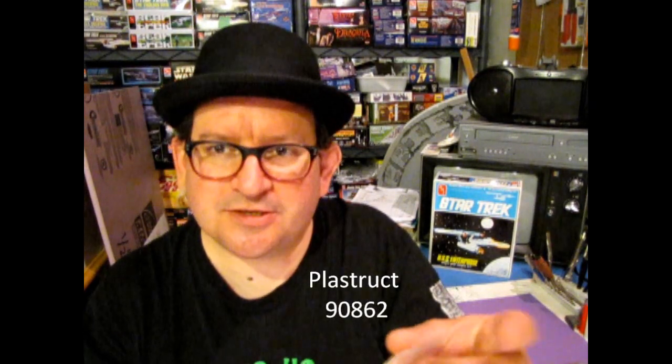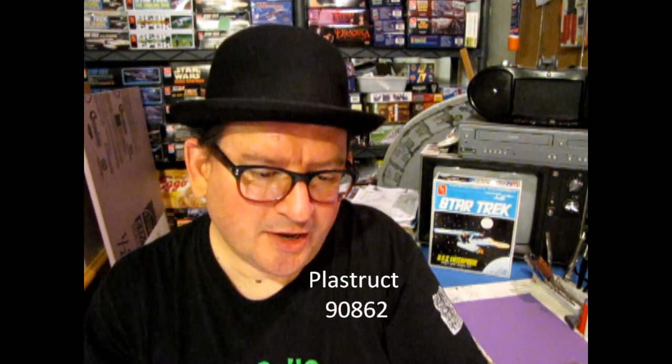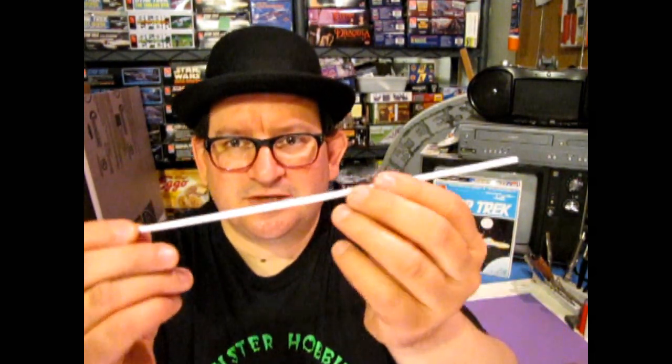So, these rounds are actually 90862. That's the part number. And they are 0.156 of an inch, or 4 millimeters round. So, we can just take one of these off. As you can see, this is a fairly long tube. Actually, not a tube. It's a rod.